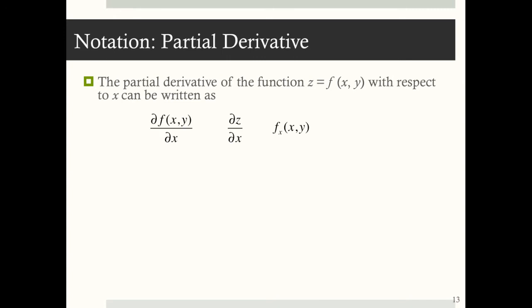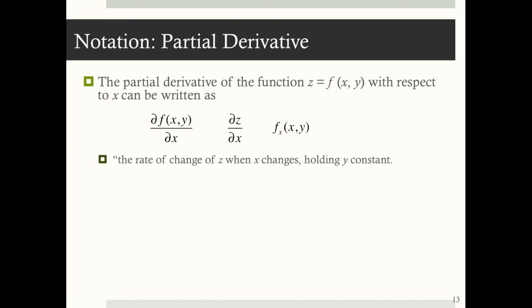Consider the function z equals f of x and y. The partial derivative of this function with respect to x can be written as: ∂f(x,y)/∂x, ∂z/∂x, or f subscript x of x and y. Notice this little curved d — we use it instead of a regular d because it tells us this is a partial derivative. This tells us the rate of change of z when x changes holding y constant.